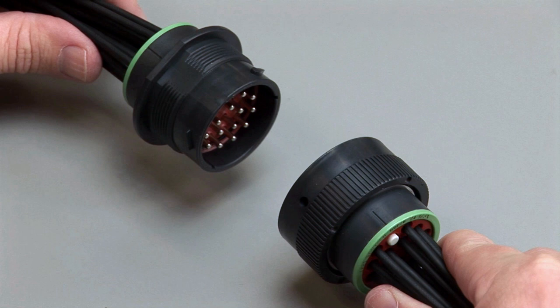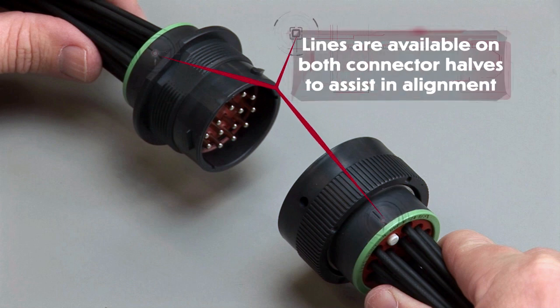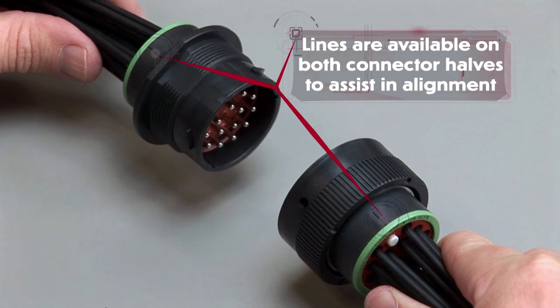When mating an HDP20 or HD30 series connector, grasp the plug by the locking ring and line up the mating receptacle. Lines are available on both connector halves as a visual aid to assist in alignment.